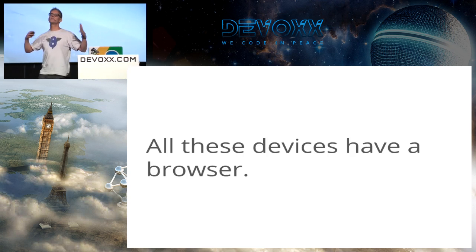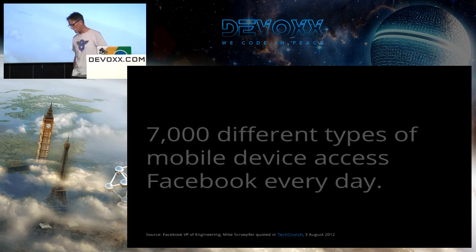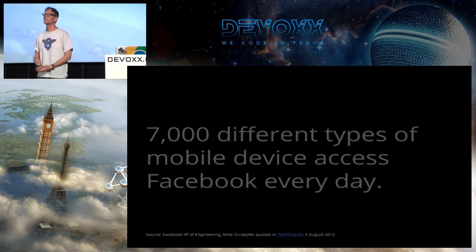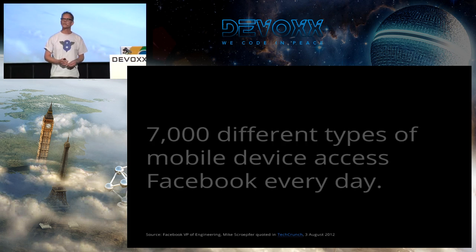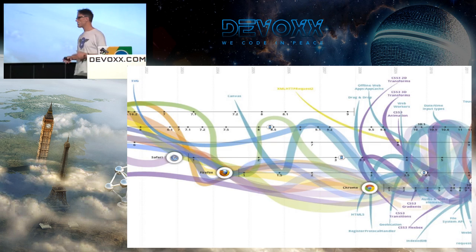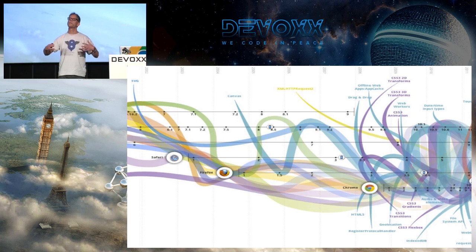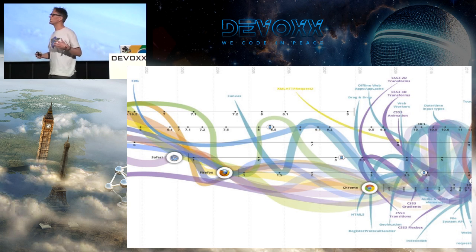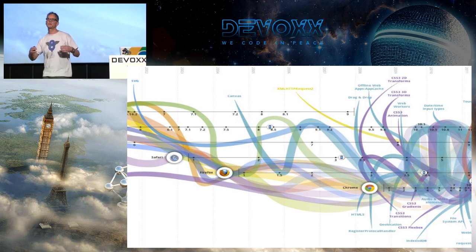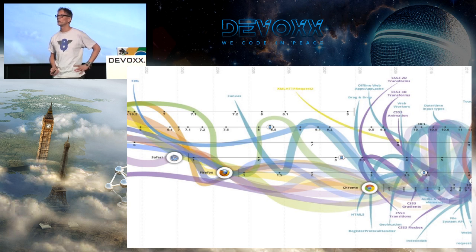The one thing that all these different devices have in common is that they've all got a browser, so they all support web apps. Facebook is telling us they're getting something like 7,000 different devices using their sites every day. Looking back at DevOps last year, it's amazing how much the web has changed, particularly with new APIs pushing the limits of what we're doing on mobile and pushing the limits of hardware as well, especially with stuff like WebRTC coming on board.